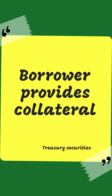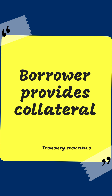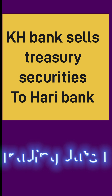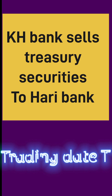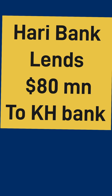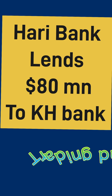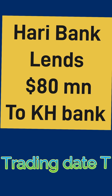The borrower provides collateral by way of treasury securities, which are approved securities for collateralized transactions. This repo trade works like this: on trading date T, KH Bank sells the treasury securities to Hardy Bank, and Hardy Bank lends 80 million dollars to KH Bank on the basis of the collateral received.